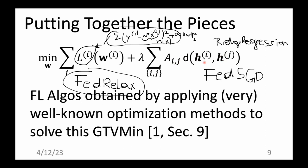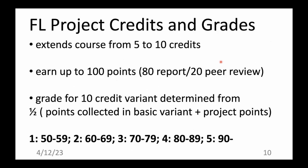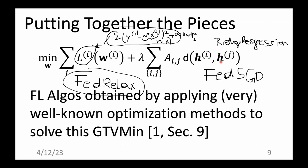The discrepancy measure could be the difference in predictions of the two hypotheses on a common test set — which requires choosing which test set to use — or you might use the norm of the parameter vector differences, which only works for parametric models but is a valid choice if you stick to parametric models.